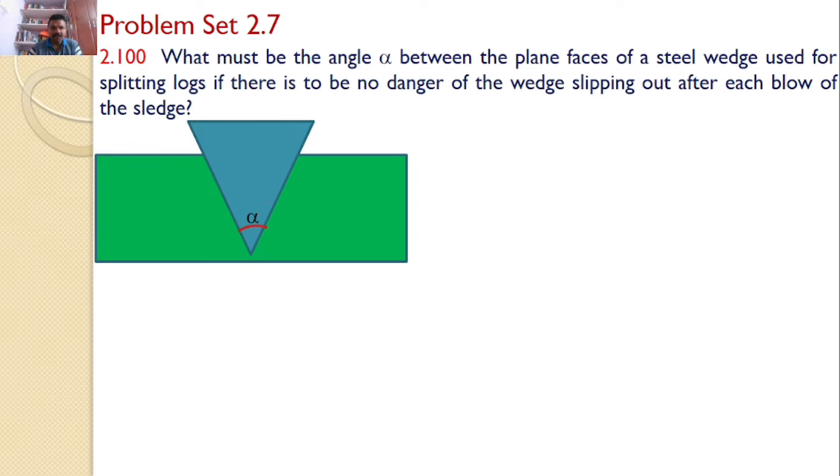For that let us draw the free body diagram for the wedge. The various forces acting on the wedge: here I can find there is a contact, so I can find a normal reaction, and also here I can find the normal reaction. Let those two normal reactions are N and N. The log is moving in the upward direction, there is a frictional force acting along the surface and it is towards downwards. Let those magnitudes are mu N and mu N. These are the forces acting on the wedge.